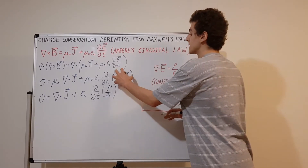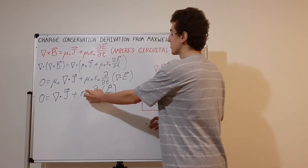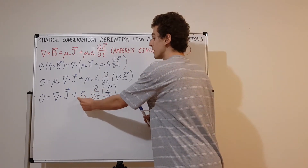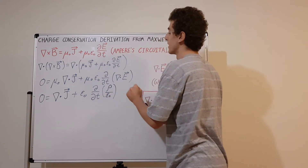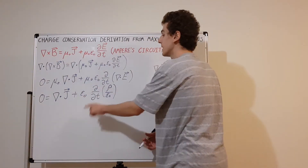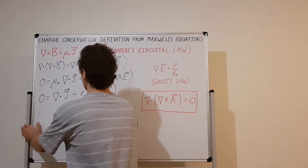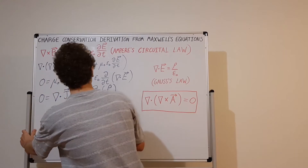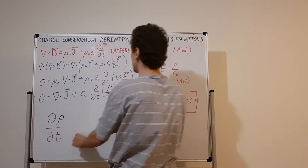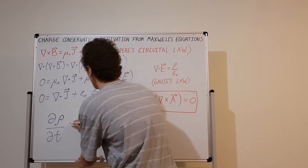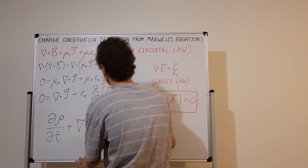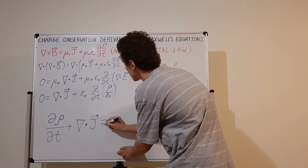Differentiation is a linear operator, so we take the epsilon-nought constant out front, and it cancels with the epsilon-nought in the denominator. What we get in the end — written clearly — is: the partial derivative of the charge density rho with respect to time, plus the divergence of J (the electric current density vector), equals zero. This is charge conservation.